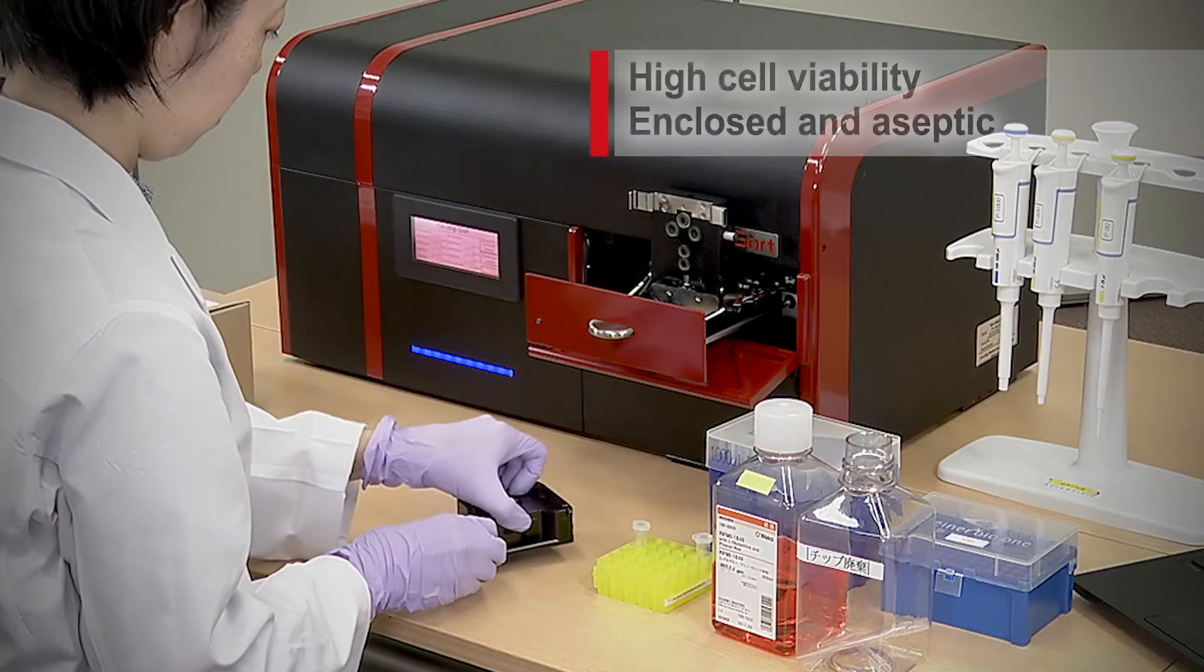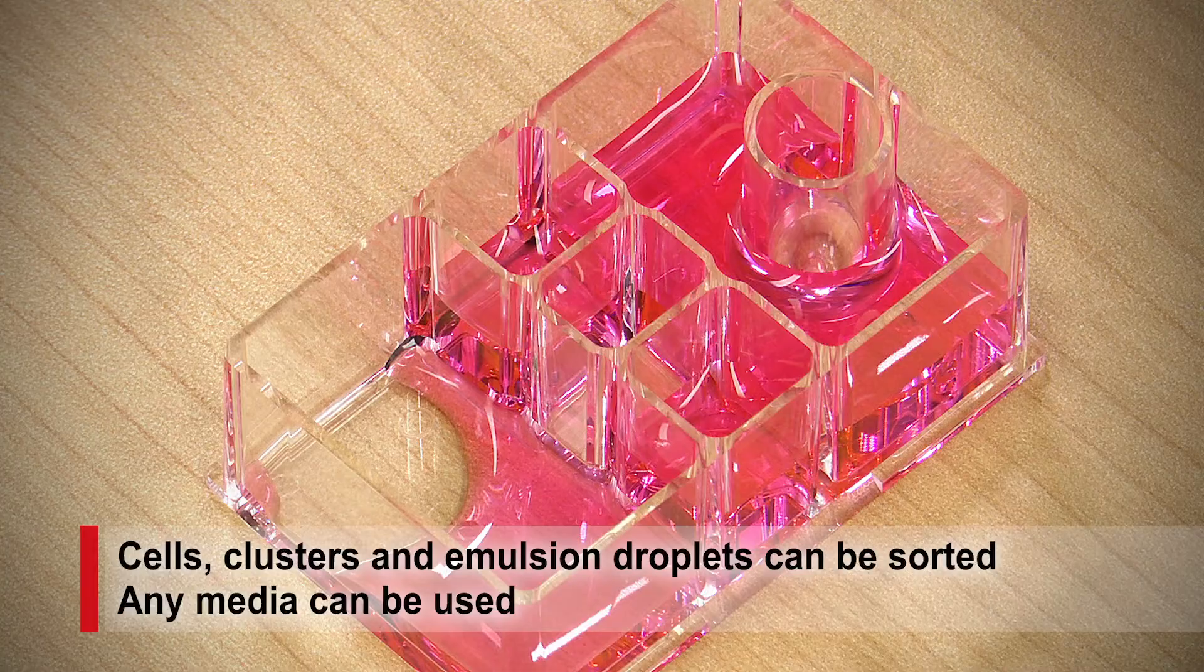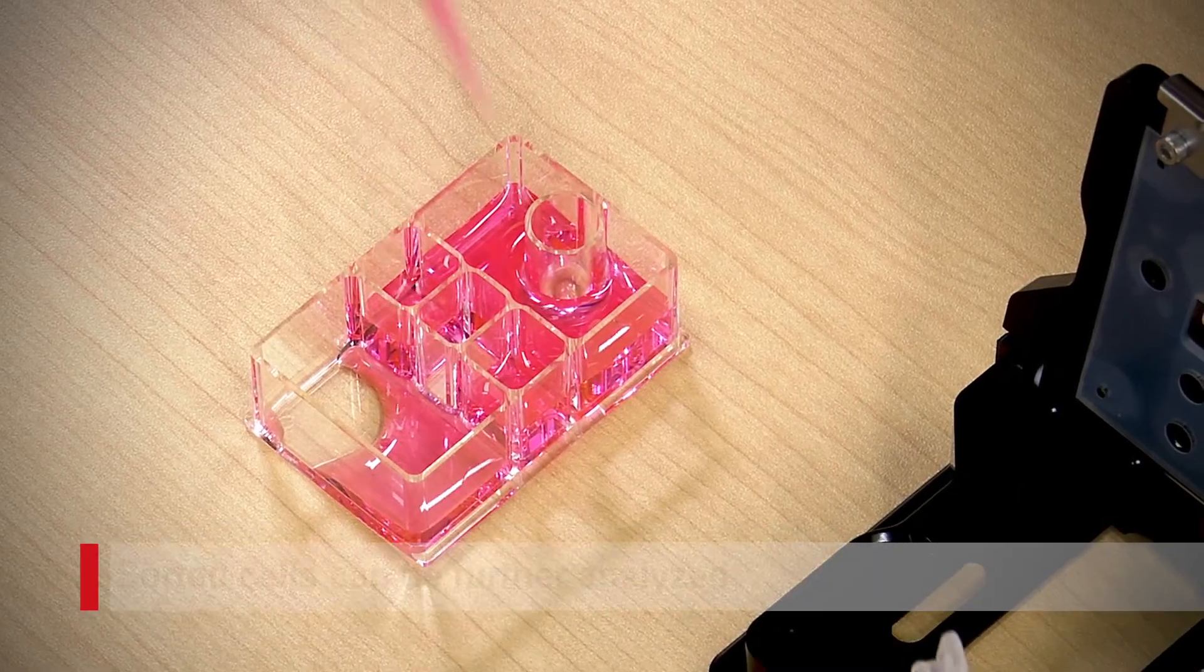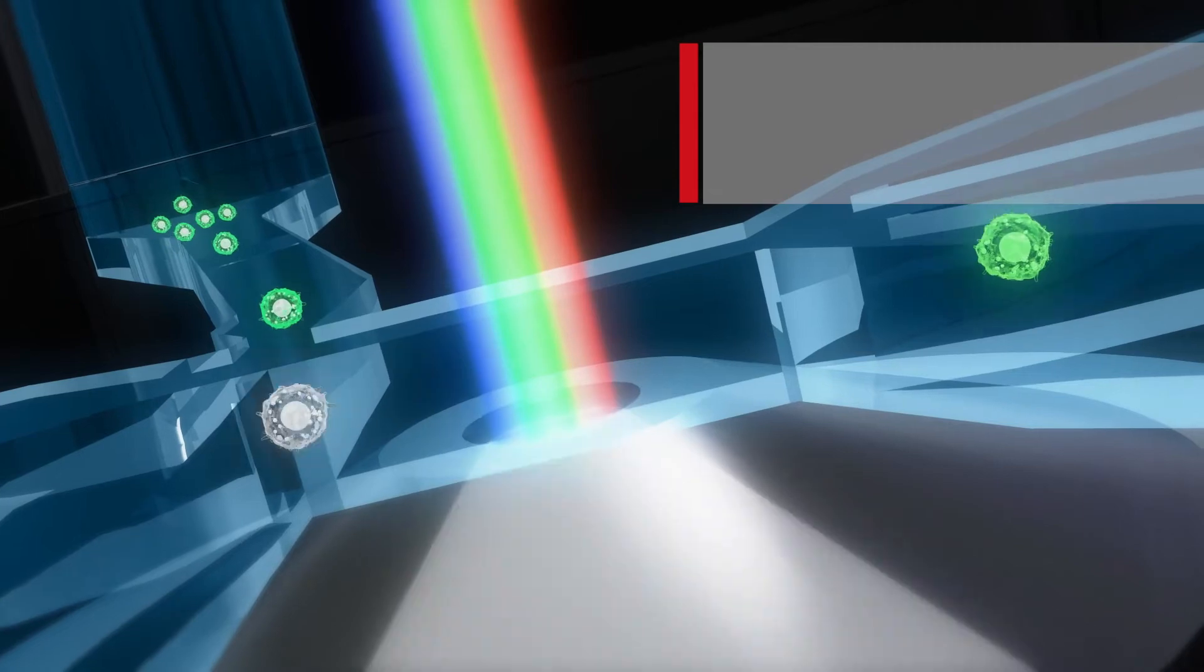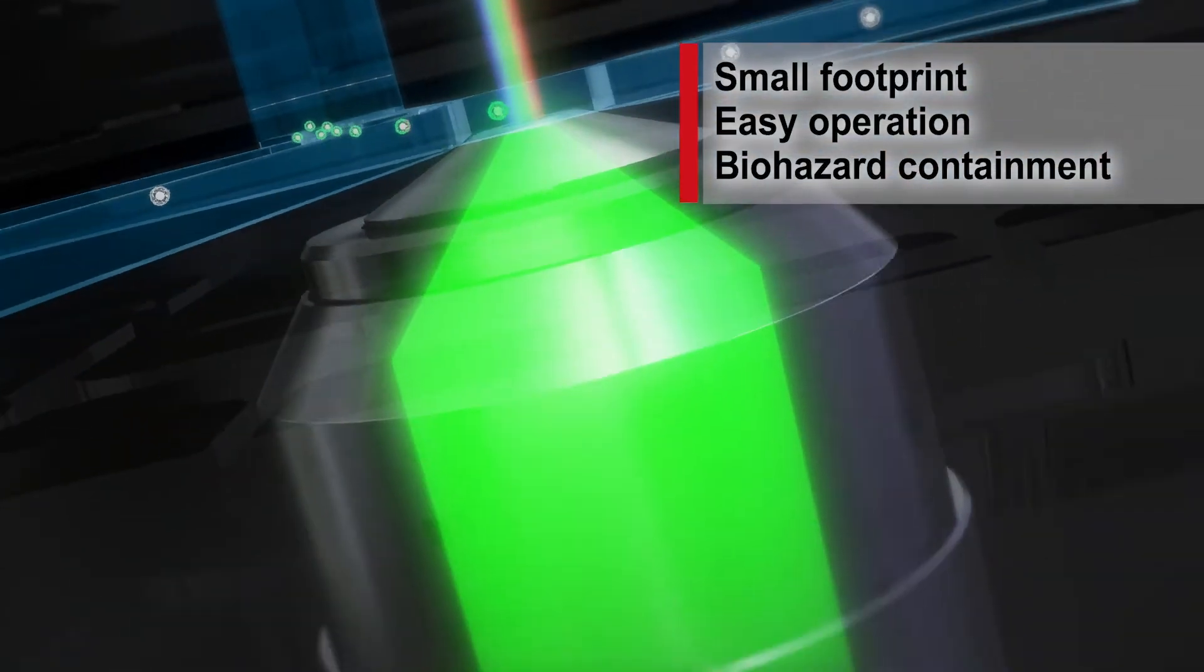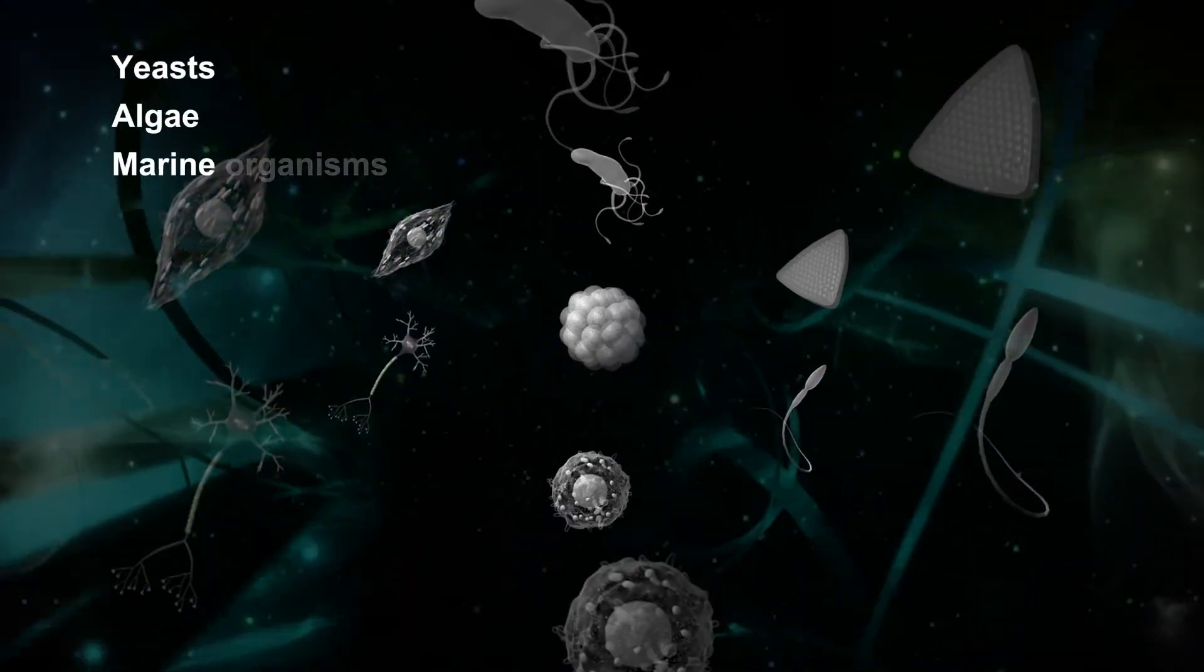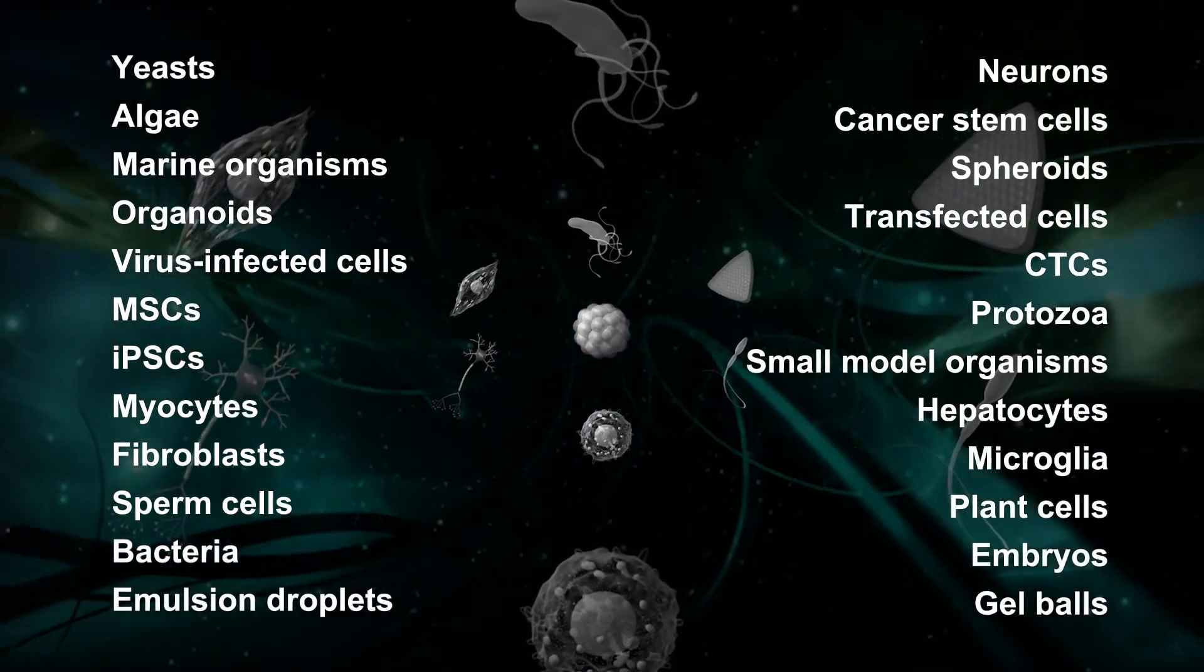Damage-free, aseptic, and contamination-free cells, cell clusters, and water-in-oil emulsion droplets can be sorted. Re-analysis and re-sorting of samples are possible. On-chip Sort is compact, easy to use, and compatible with biohazardous samples. You can sort cells that are particularly important for the future without having to worry about damage at all.